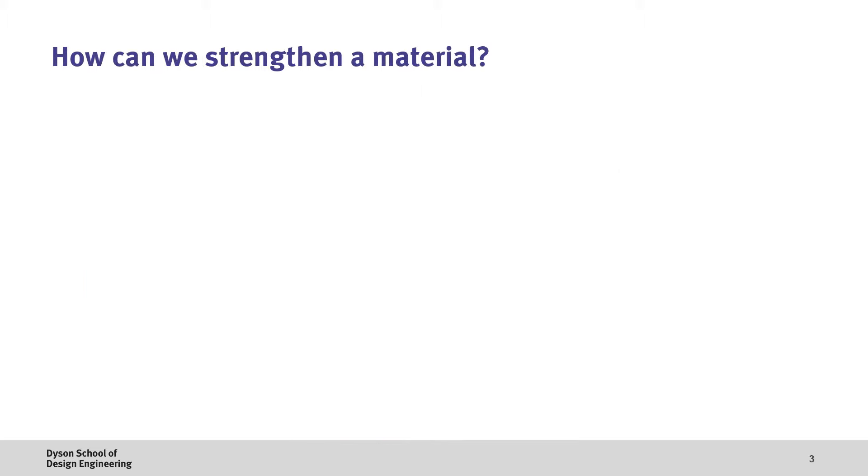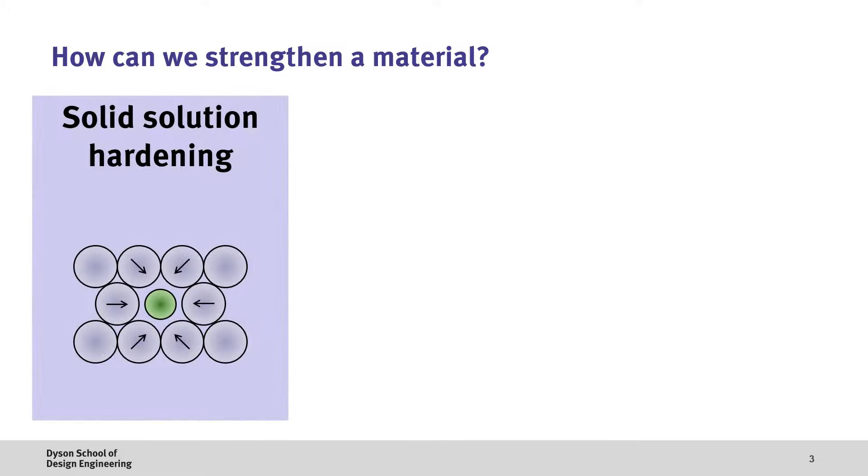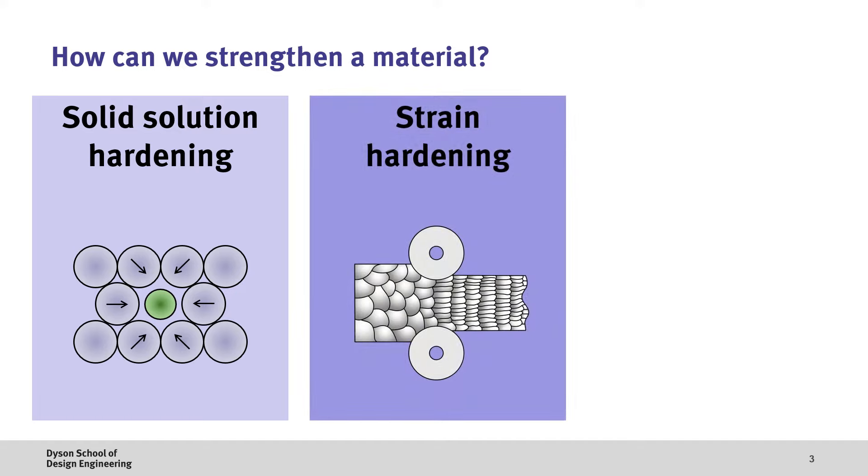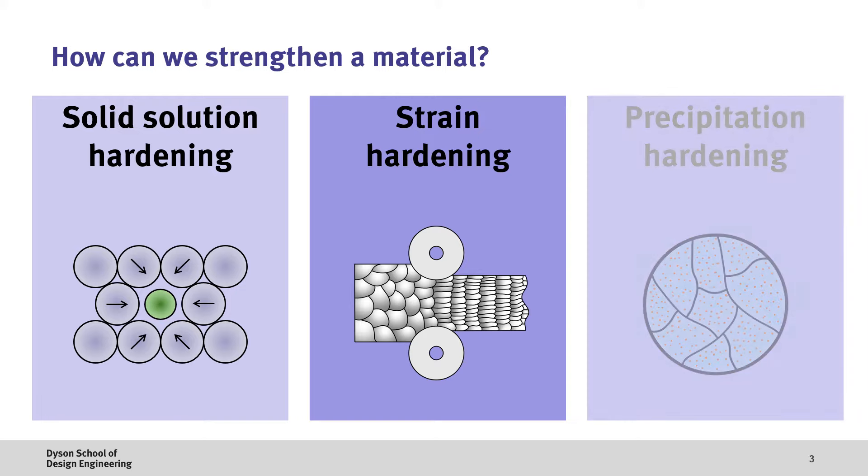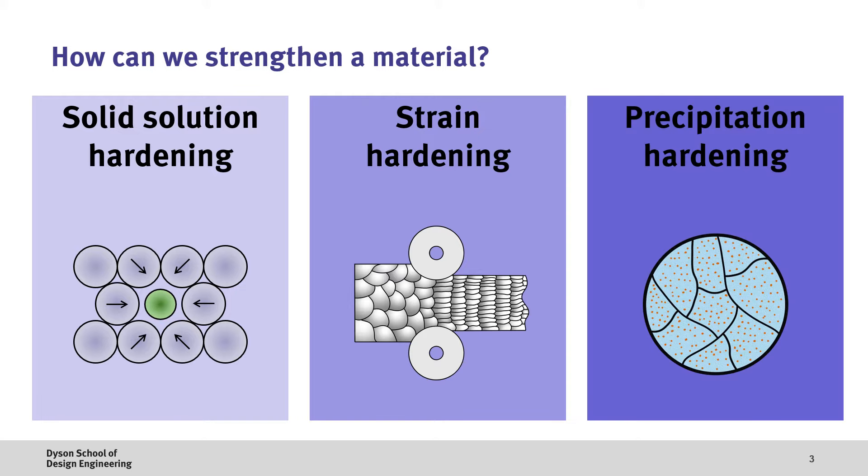So at a high level there are three approaches for strengthening a material that we'll cover in this video. The first is solid solution hardening where we alloy a material with an impurity. The second is strain hardening or cold working where we plastically deform a material to enhance its strength. And finally precipitation hardening where we form a second well dispersed and small phase in a material through specific heat treatment processes.